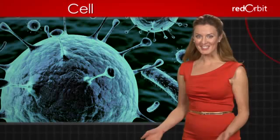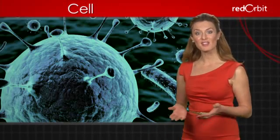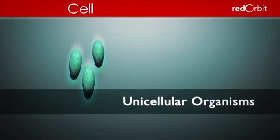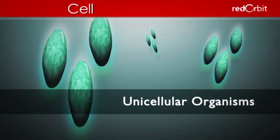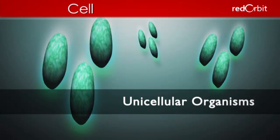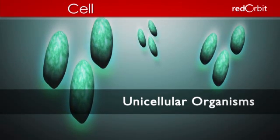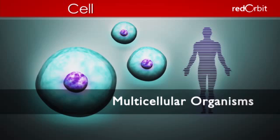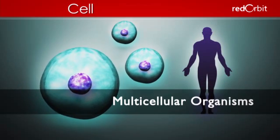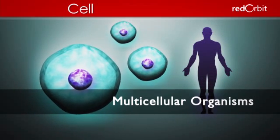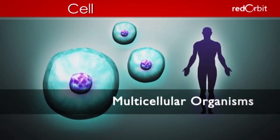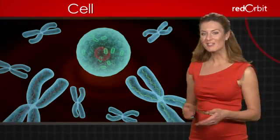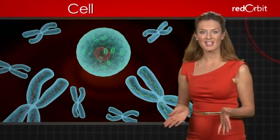Some cells, like bacteria, are individual, self-replicating, independent life forms called unicellular organisms, or single-celled organisms. Other cells are part of multicellular organisms, such as us humans, and collectively carry out specialized functions to keep that organism alive.